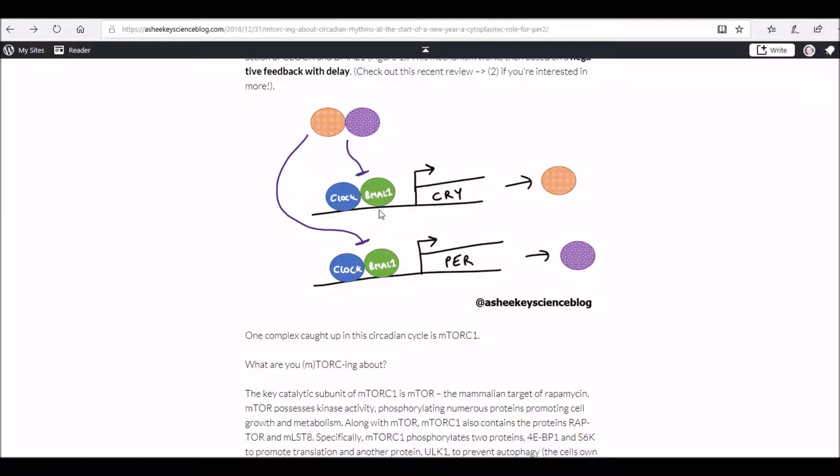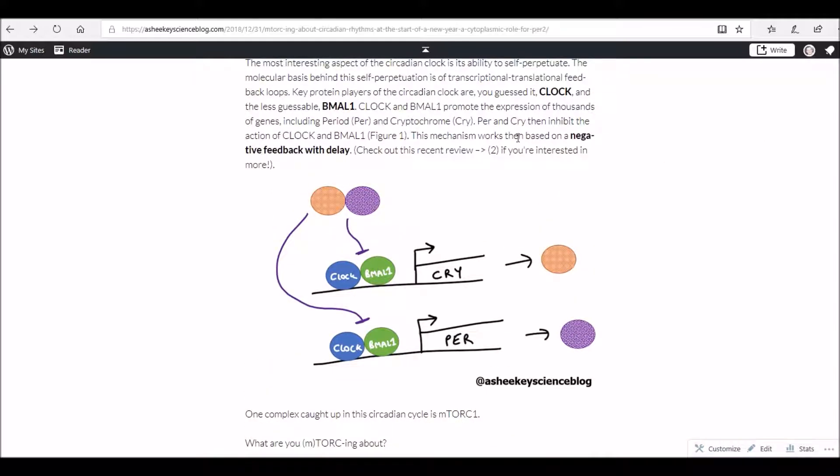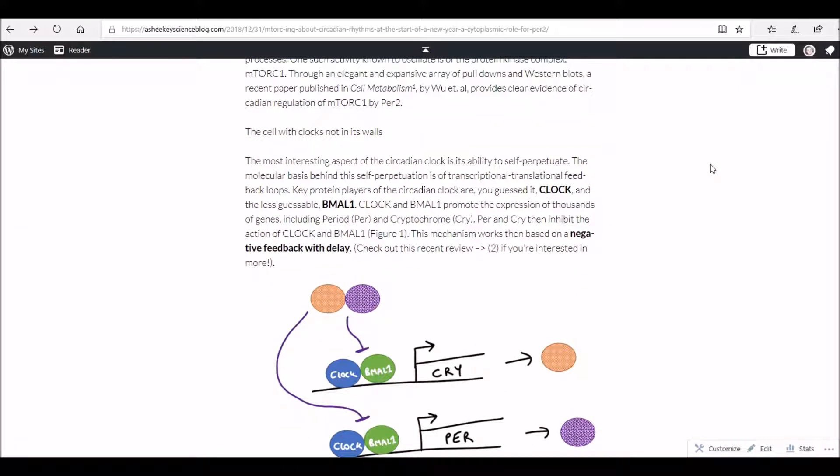To provide a simplified overview here, there are four different key core clock components that produce a negative feedback cycle that enables the 24-hour regulation to occur. In mammals, these four main components are cryptochrome, periods, clock and BMAL1. Clock and BMAL1 promote the expression of cry and per, and then cry and per, the protein products, repress the activity of clock and BMAL1 preventing their own expression. This negative feedback with delay enables the around 24-hour regulation to occur.